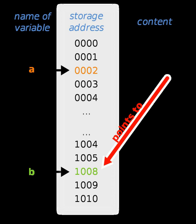In C++, there is no void& (reference to void) to complement void* (pointer to void), because references behave like aliases to the variables they point to, and there can never be a variable whose type is void. These pointer declarations cover most variants of pointer declarations. Of course it is possible to have triple pointers, but the main principles behind a triple pointer already exist in a double pointer.